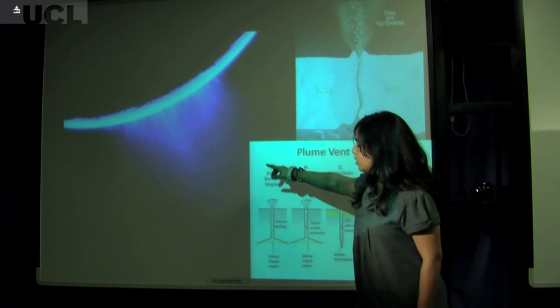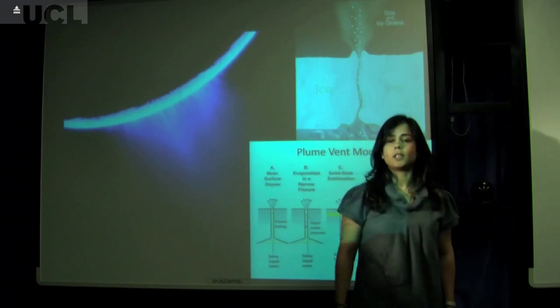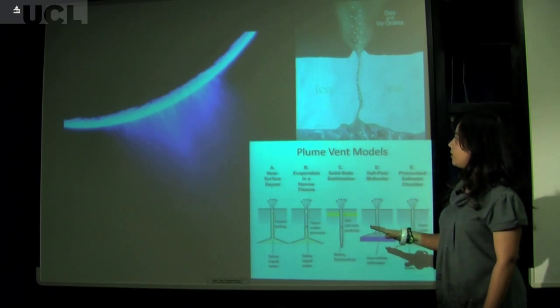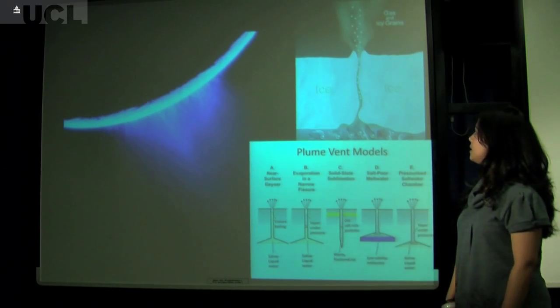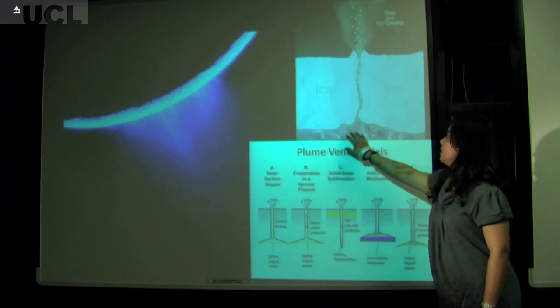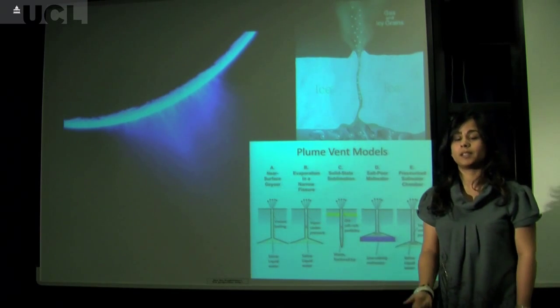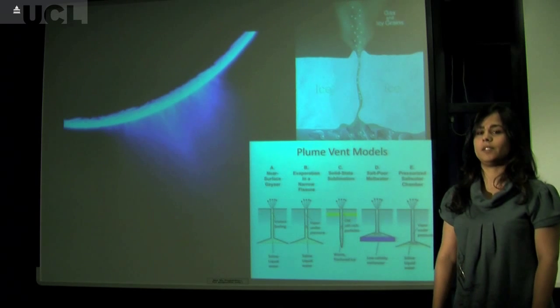This incredible photograph here shows the water plume of Enceladus letting off liquid water into the Saturn system. This is really cool because one of the models of this water ice being let off into the Saturn system involves a saline ocean underneath the ice crust. A saltwater ocean is really exciting because that could mean plants or maybe even life underneath the surface of Enceladus.